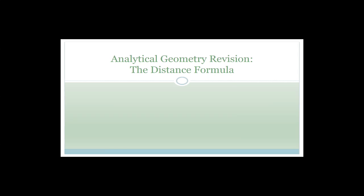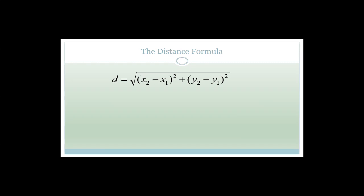Now let's talk about the distance formula - we're just doing revision. I find that some grade 11s move on to grade 11 analytical geometry and don't remember the grade 10 or grade 9 stuff. The distance formula is the square root of (x2 minus x1) squared plus (y2 minus y1) squared. It's on your formula sheet so you don't have to memorize it - you just need to know how to use it. Note that 'distance' and 'length' mean the same thing here.